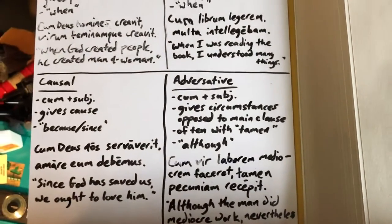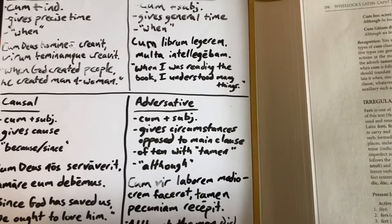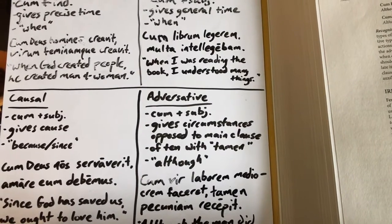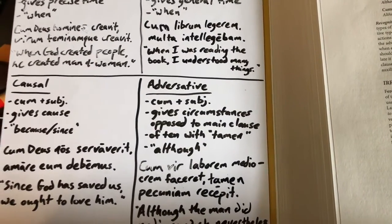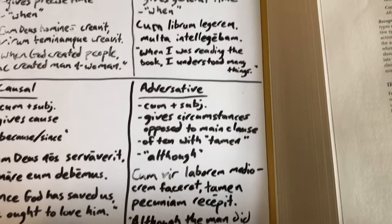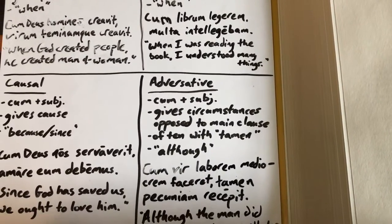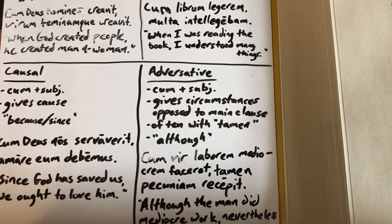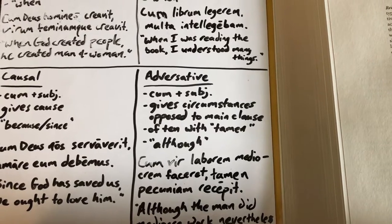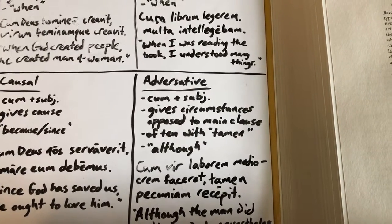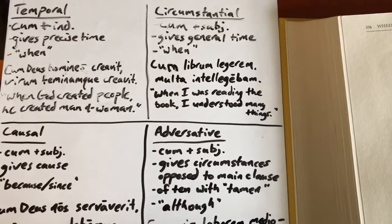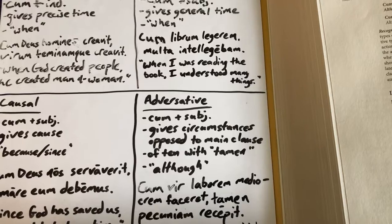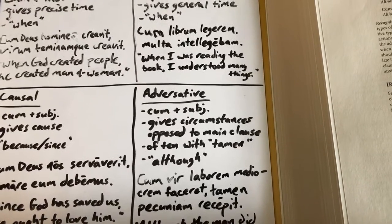You'll notice that three of these cum clause types take the subjunctive. So often you'll have to use the context of the sentence to determine whether it makes the most sense to say 'when,' 'since,' or 'although' — you do have to make some judgment calls when translating. Obviously, if you have an indicative verb, it has to be temporal. But if you have a subjunctive verb, you need to think it through a bit more.